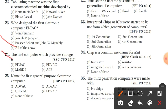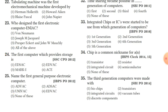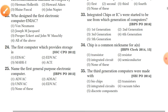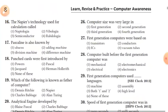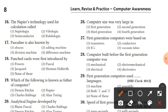Question 24: the first computer which provided storage was EDSAC. Option 1 is the right answer. Question 25: the first general purpose electronic computer was UNIVAC. Option 3 is the right answer.